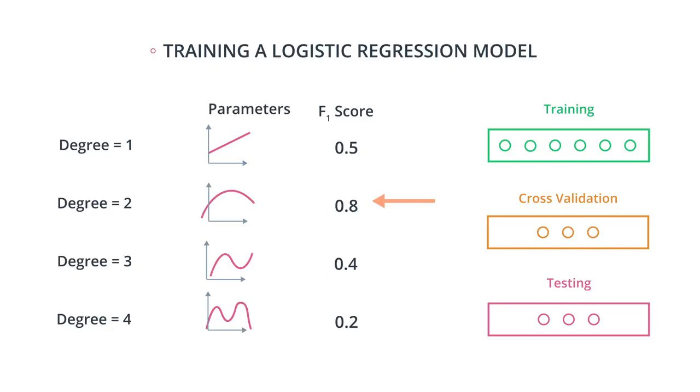So the parameters of the algorithm in this case are the coefficients of the polynomial. But the degree of the polynomial is like a metaparameter. We call those hyperparameters.